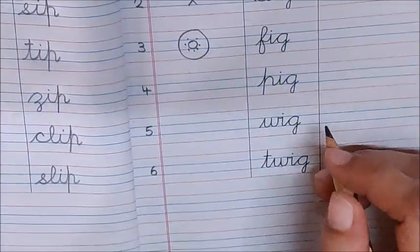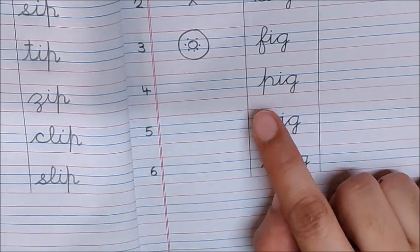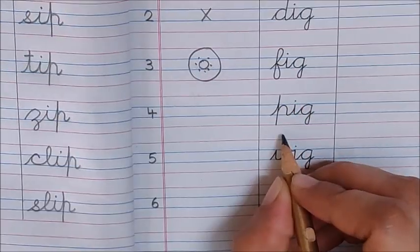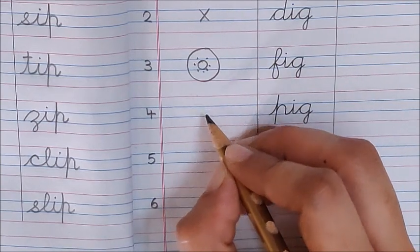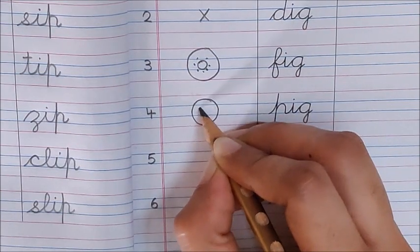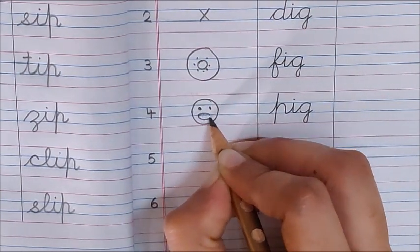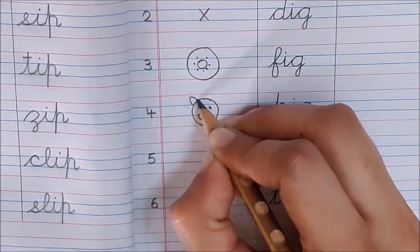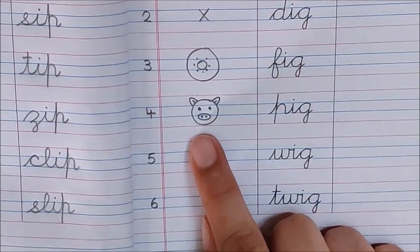Now children let us go to the next word. Pig. Pig is an animal, so let us draw pig. There is a pig here, how to draw a pig. Again you have to make a round shape, eyes and this is the nose, ears of the pig. Pig.